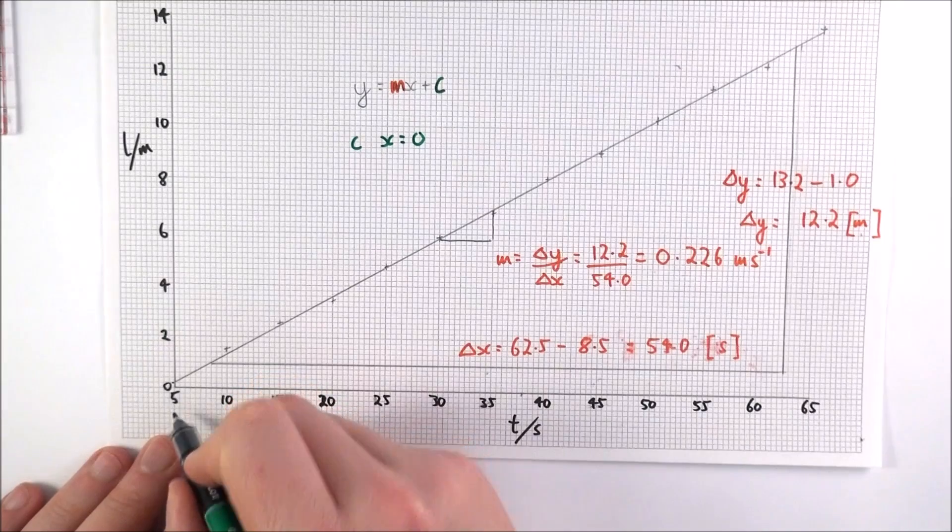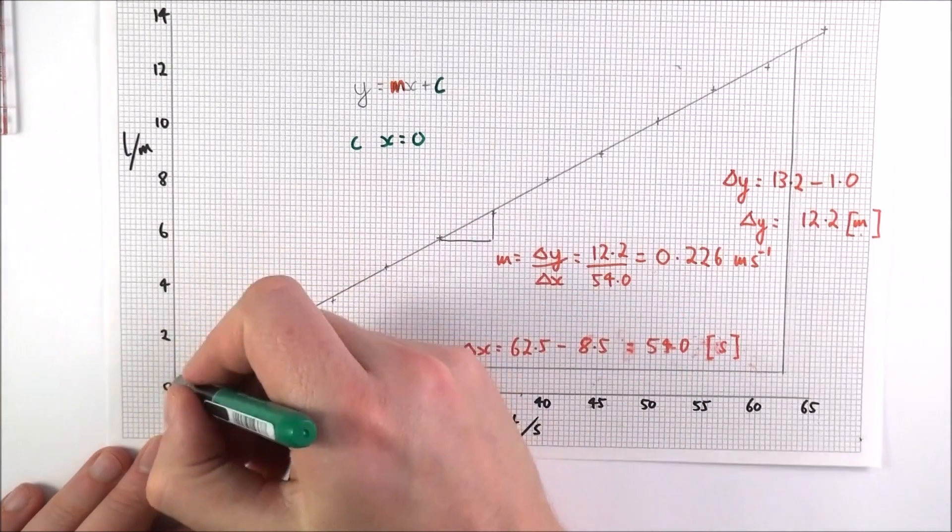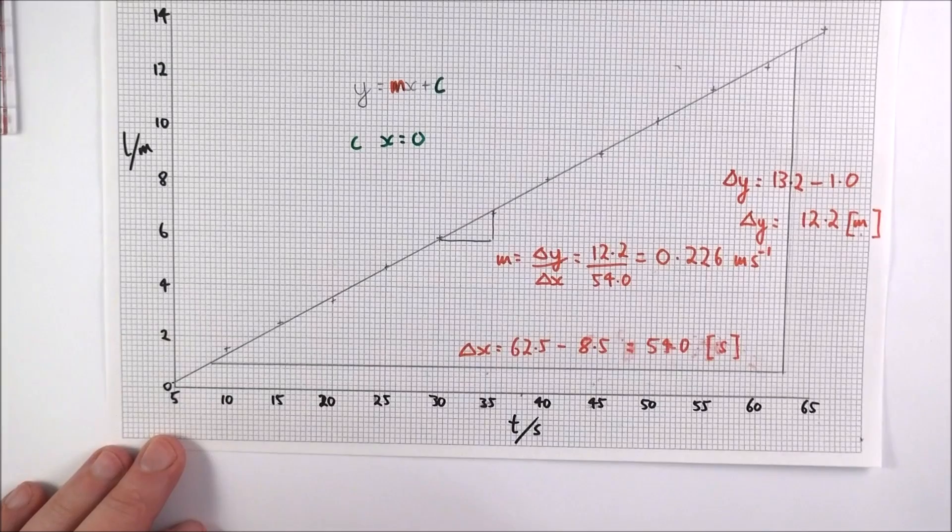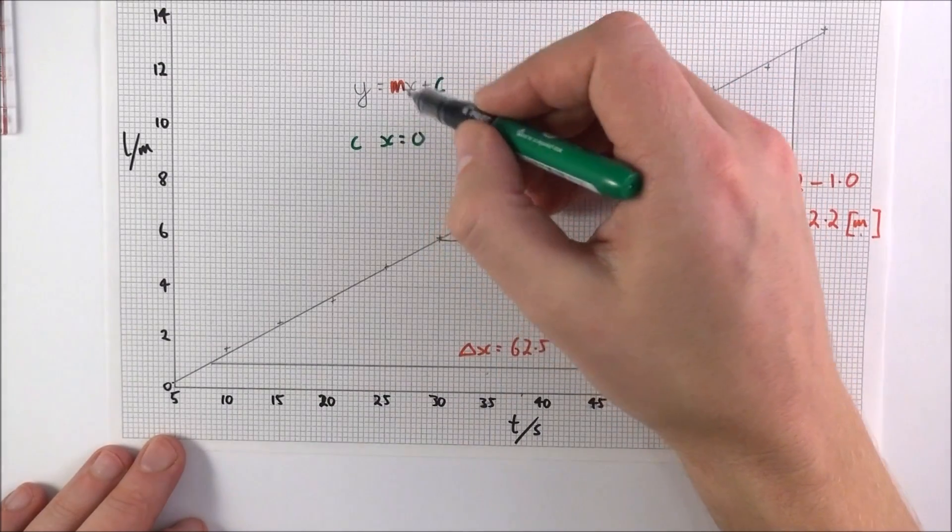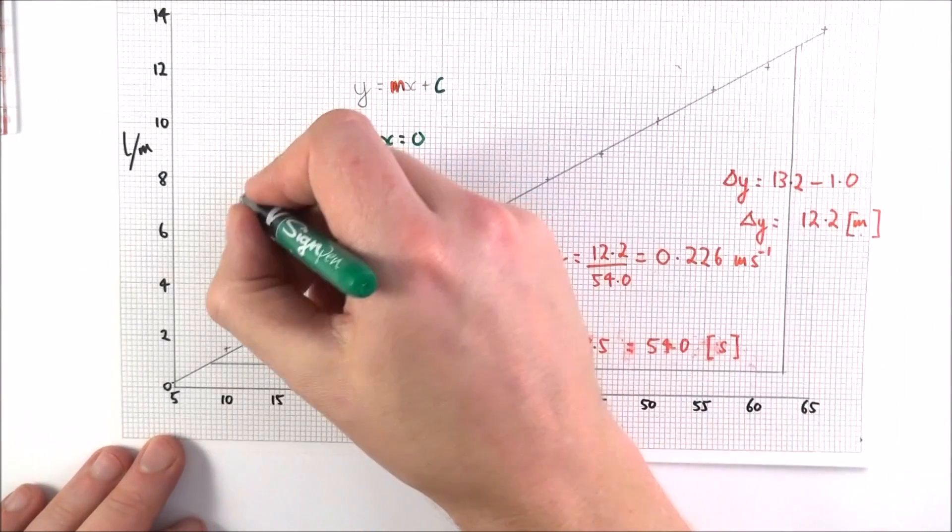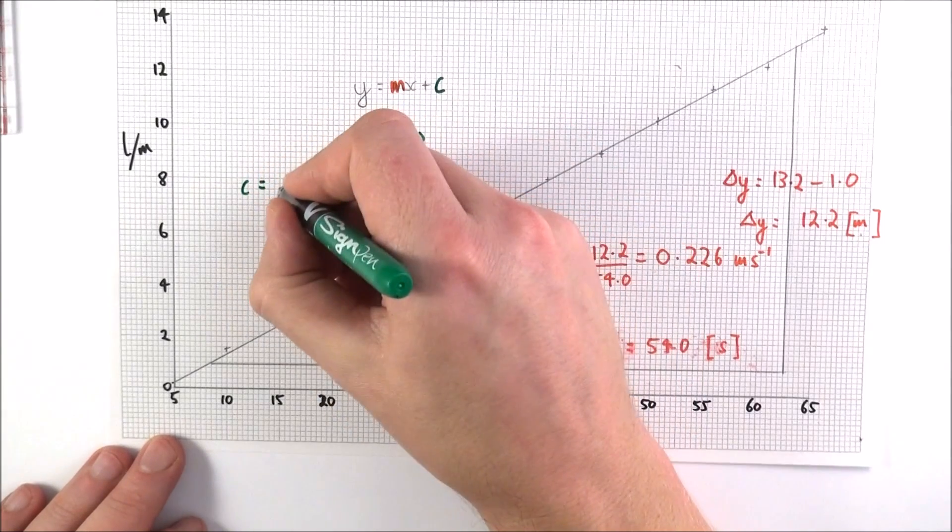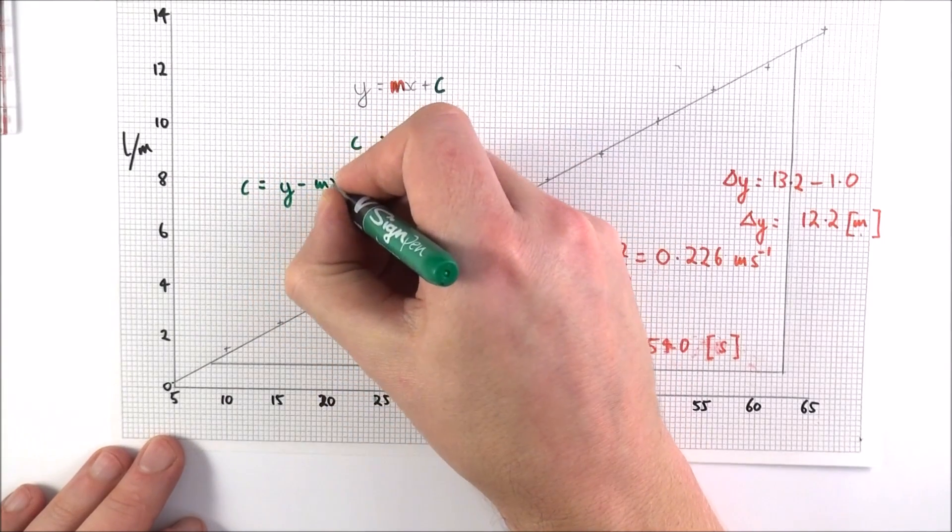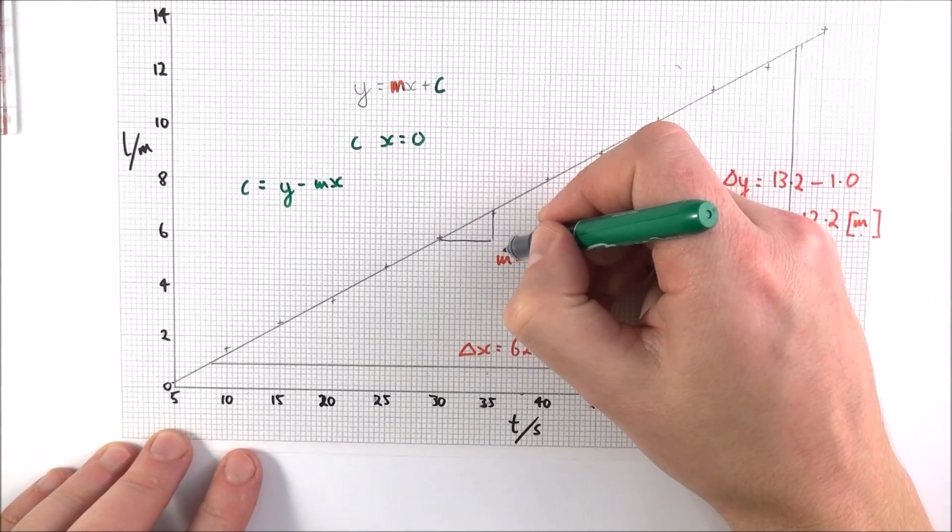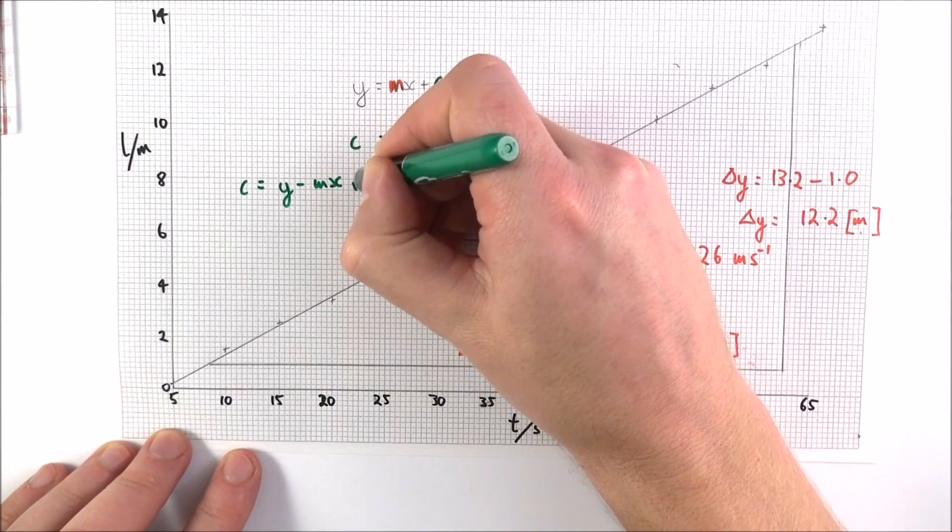And at this point here, because I started labeling at five, this value here is not the y-intercept. So how do we find it out? What we can do is we can think about rearranging this equation here. We know that c is equal to y minus mx. And what we can then do is we can use our value of the gradient m that we found over here.